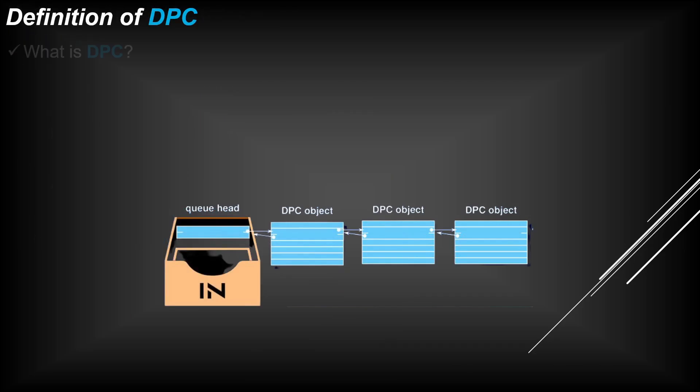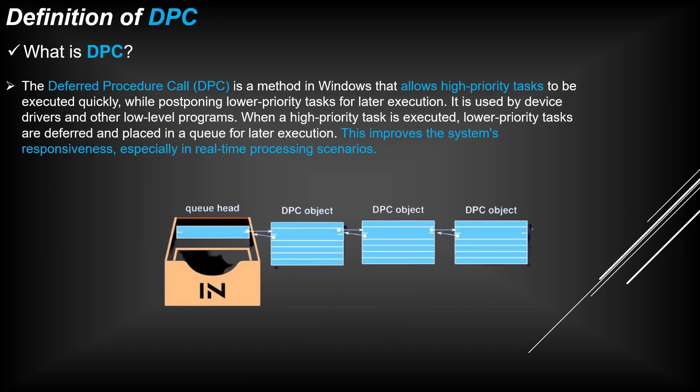Definition of DPC. What is DPC? The Deferred Procedure Call, or DPC, is a method in Windows that allows high-priority tasks to be executed quickly while postponing lower-priority tasks for later execution. It is used by device drivers and other low-level programs. When a high-priority task is executed, lower-priority tasks are deferred and placed in a queue for later execution. This improves system responsiveness, especially in real-time processing scenarios.